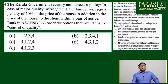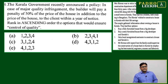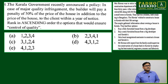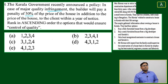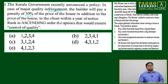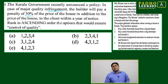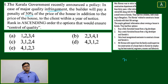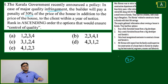Number 6. The Kerala government recently announced a policy: in case of a major quality infringement, the builder will pay a penalty of 50% of the price of the house in addition to the price of the house. For example, suppose a 50 lakh house — you will get 75 lakh. The government has made these norms. This is given in the question context.